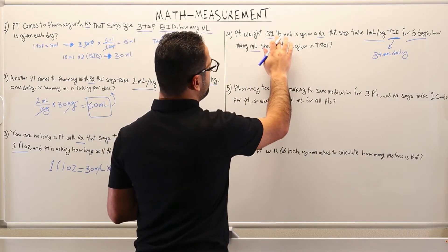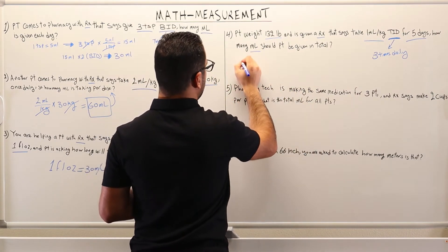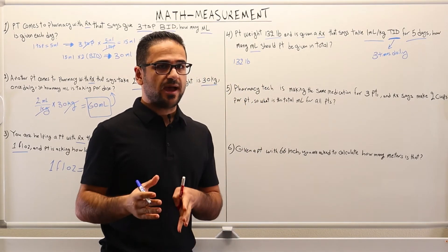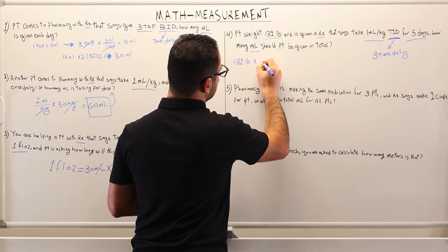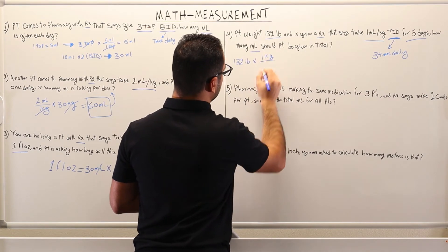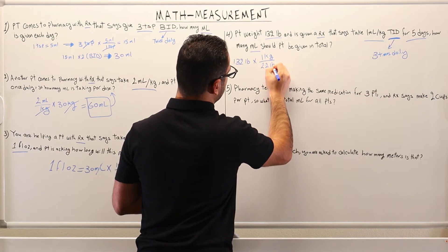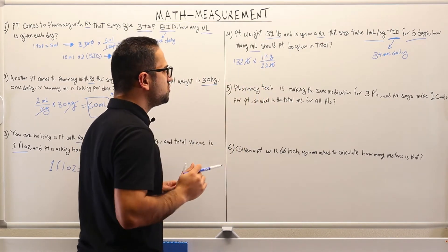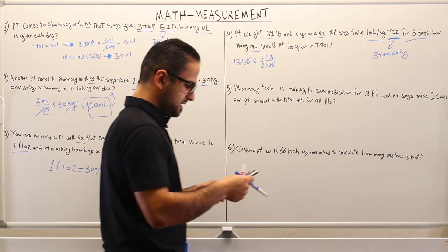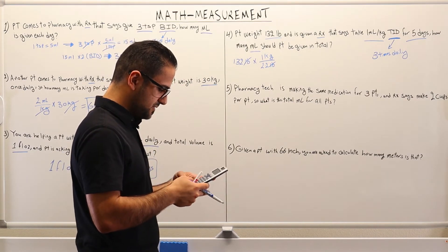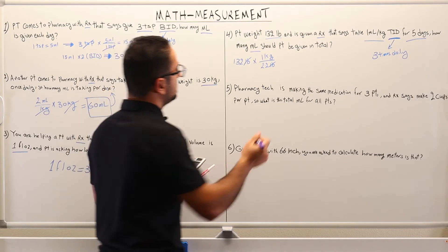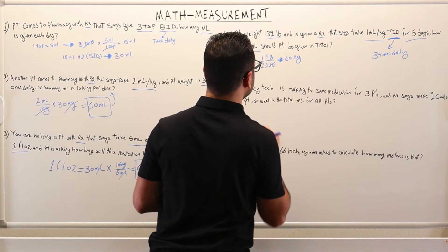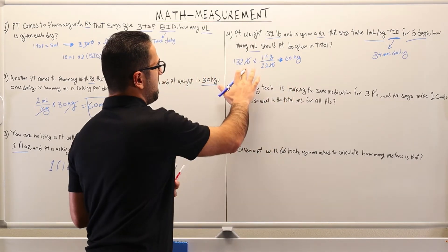First, we want to convert pounds to kilograms. The patient's weight is 132 pounds, and we know there are 2.2 pounds for every one kilogram. So we multiply 132 pounds by one kilogram over 2.2 pounds, canceling pounds. Using a calculator, 132 divided by 2.2 equals 60 kilograms. So the patient's weight after conversion is 60 kilograms.